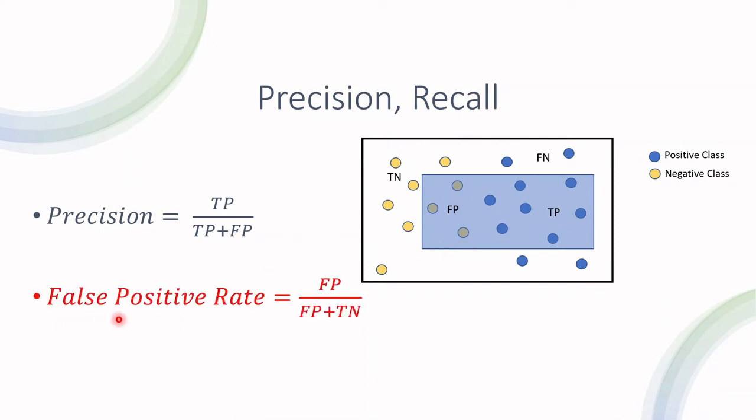So to say this in words would be how many instances out of the predicted positives are actually positives. And our previous parameter, the false positive rate, was influenced by the size of the negative class. This value, the precision, is not biased by, is not influenced by the size of the negative class, and that is why it's preferred in imbalanced cases.